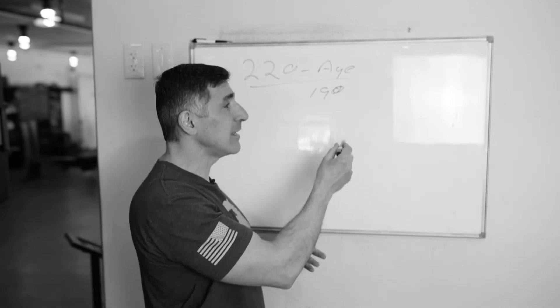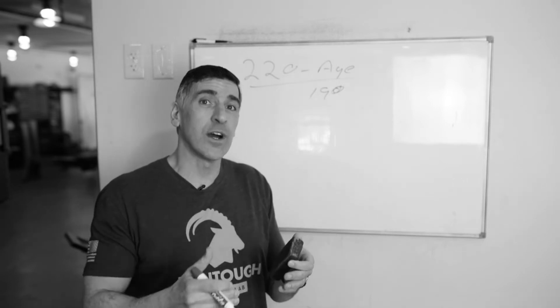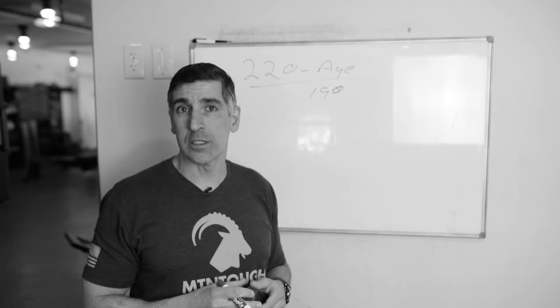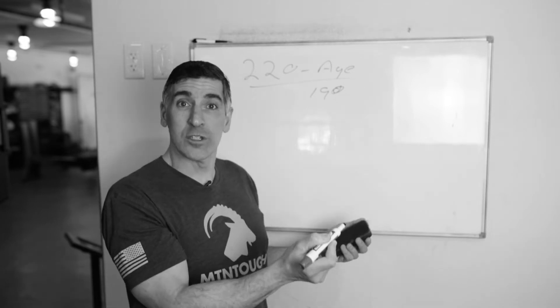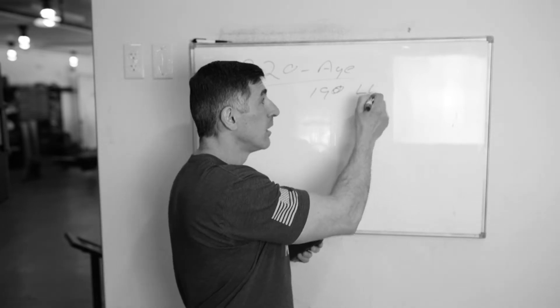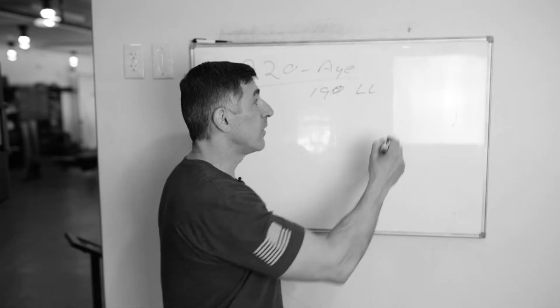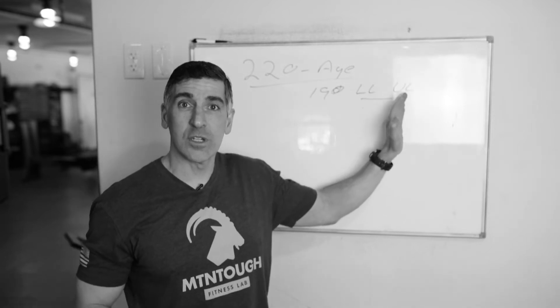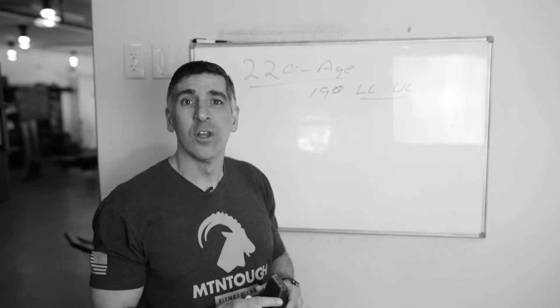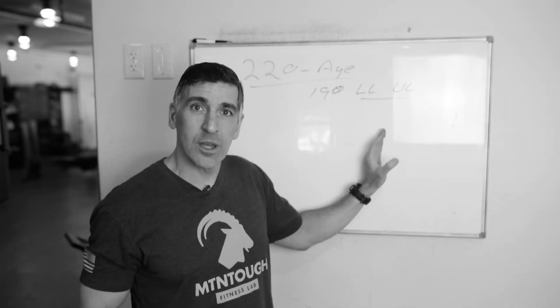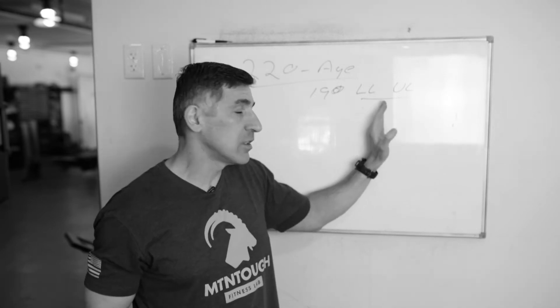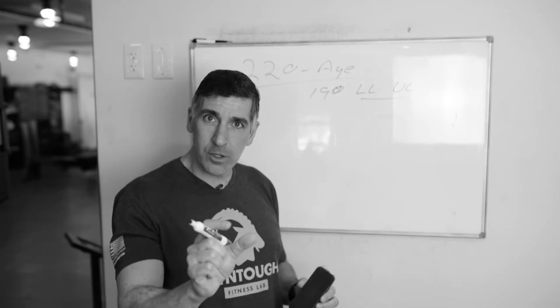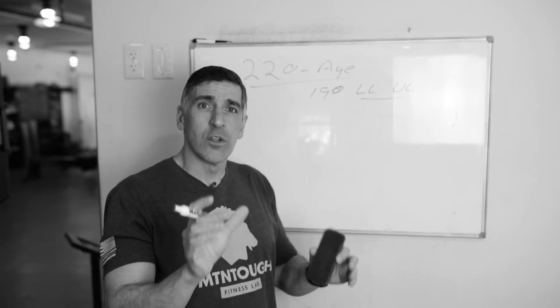So generally what people do is they take 190 and figure out what 65 or 75 or 85% of 190 is and use that for their upper and lower limits. For example, you would take your 190, multiply it by 0.65, that would give you your lower limit, and then multiply it by 0.85, that would give you your upper limit. You would set those on your heart rate monitor and stay between that range. That's a wide range. I would recommend staying closer. I used to always put mine on that 70% mark on the lower end and 80% or 85% on the upper end.